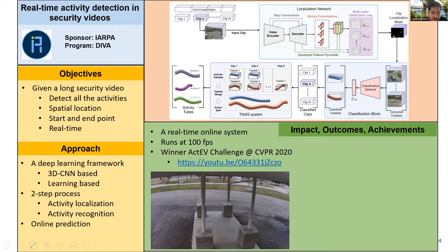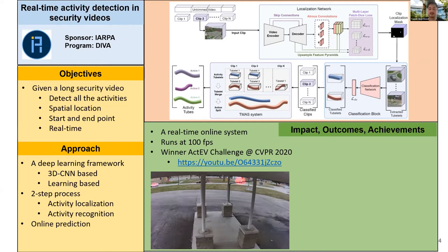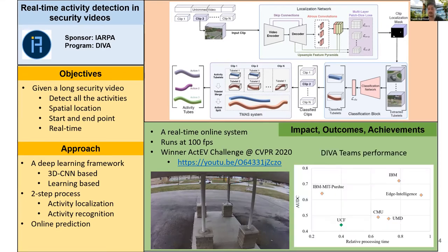Here I will show a small demo of what the system can do. This is a security feed. An activity is happening — a car is turning left, and the system can detect this. Even if there are multiple activities happening at the same time, it can localize and detect them. To note, this is not just detecting vehicles — it's classifying what kind of activity that vehicle is involved in, such as vehicle turning left or turning right. In this challenge, top computer vision groups participated, like IBM, CMU, and UMD, and our system had the best performance, not just in evaluation metric but it was faster than most other systems.